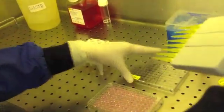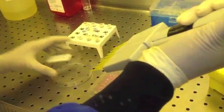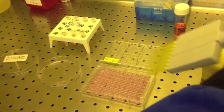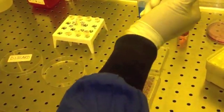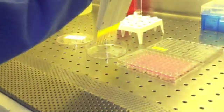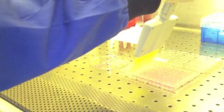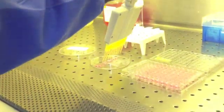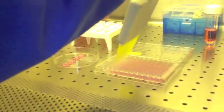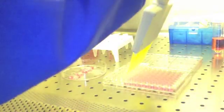Now, take the lid off, bring your discard plate close and take off the medium very carefully and chuck it in the discard plate. Do the same for column A, column B and column C.